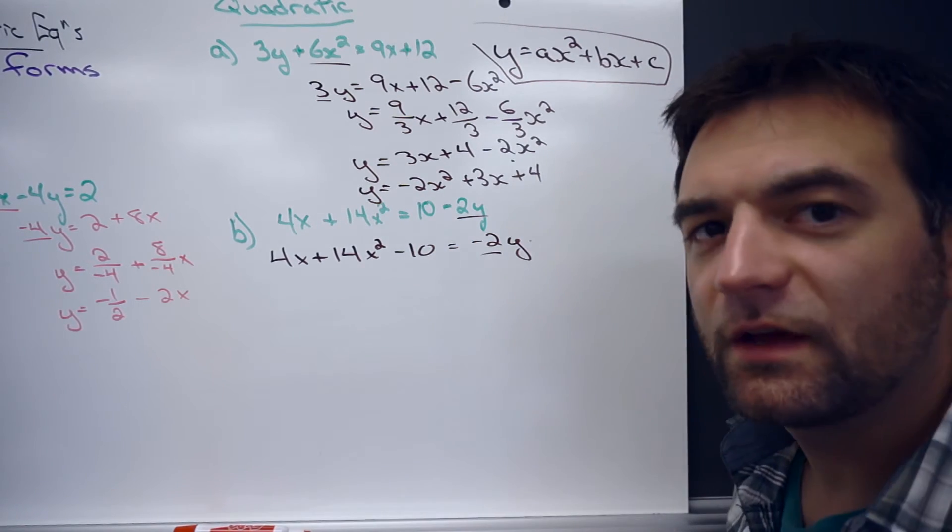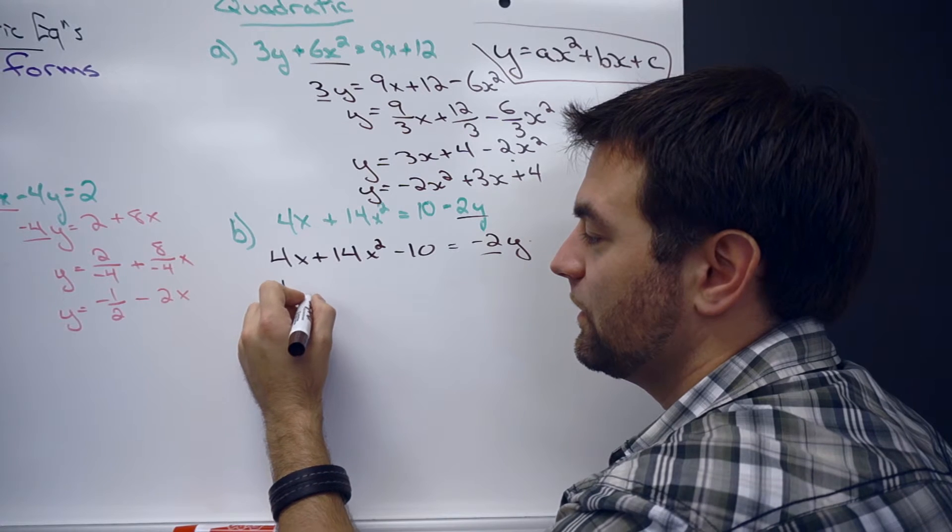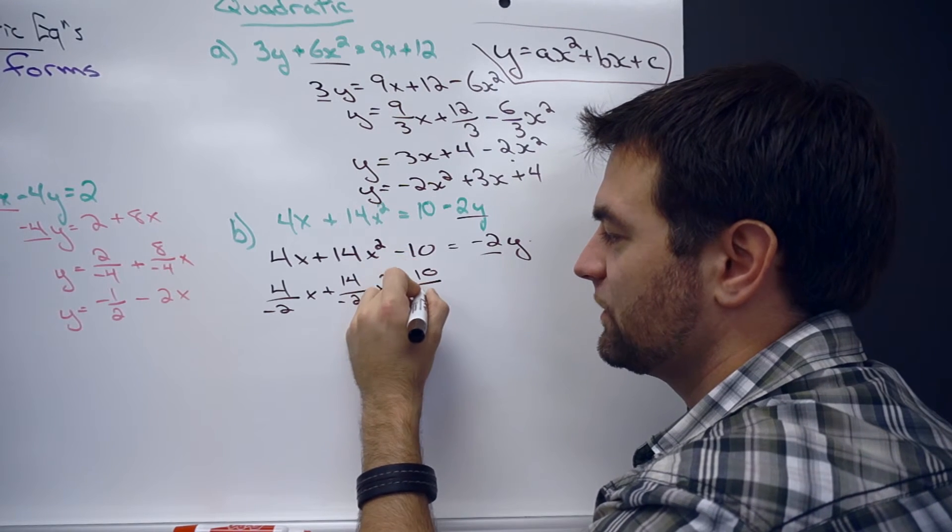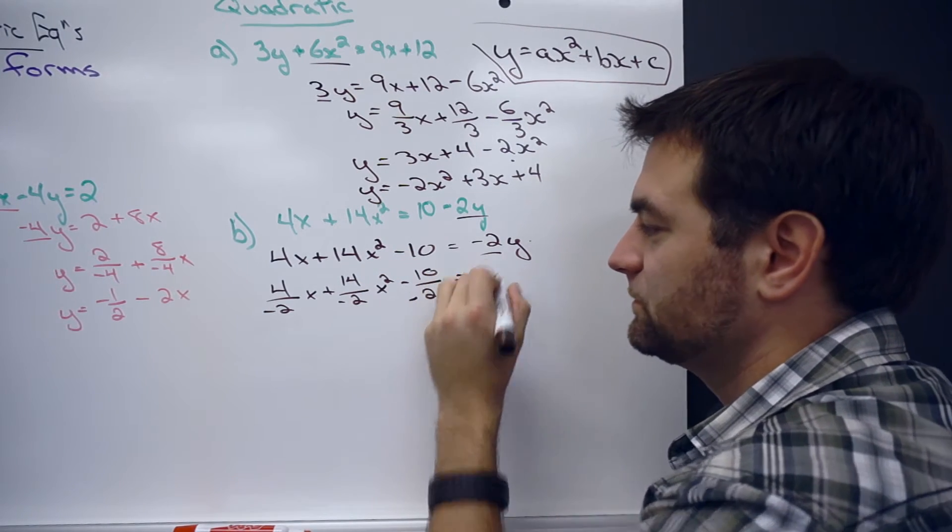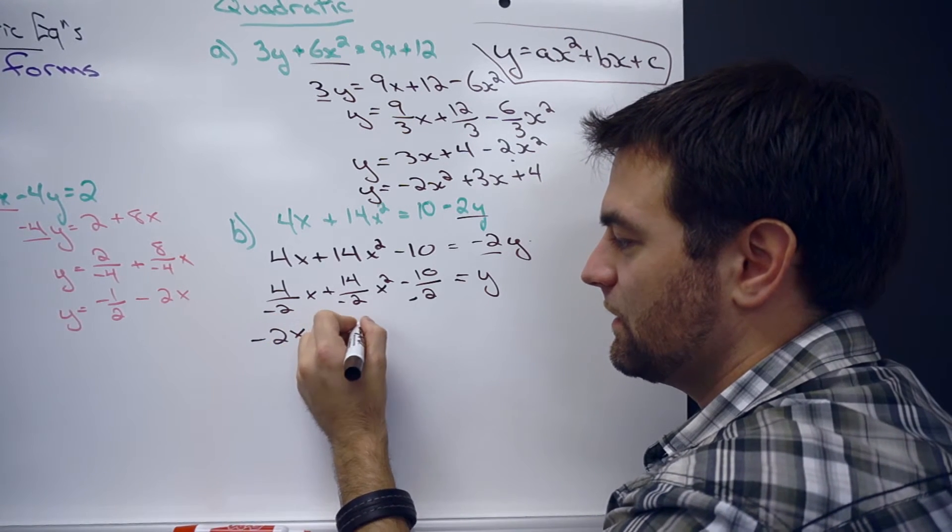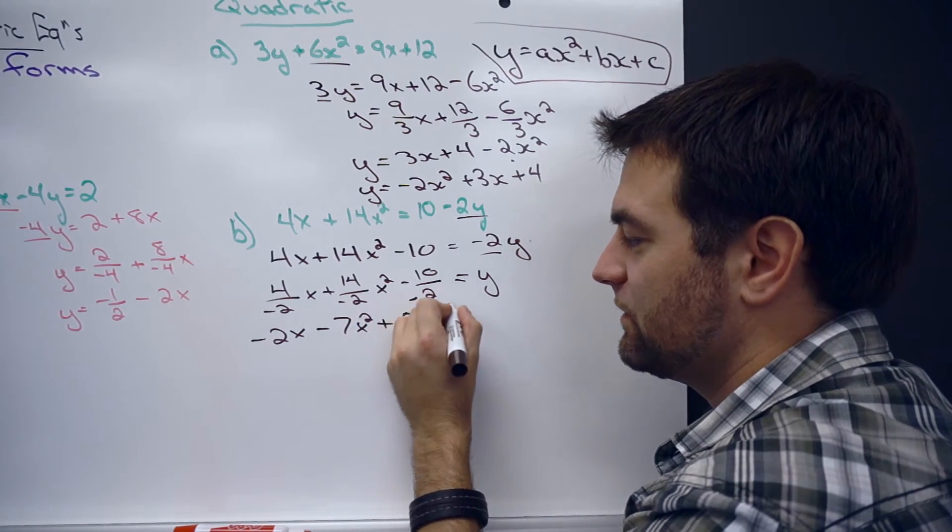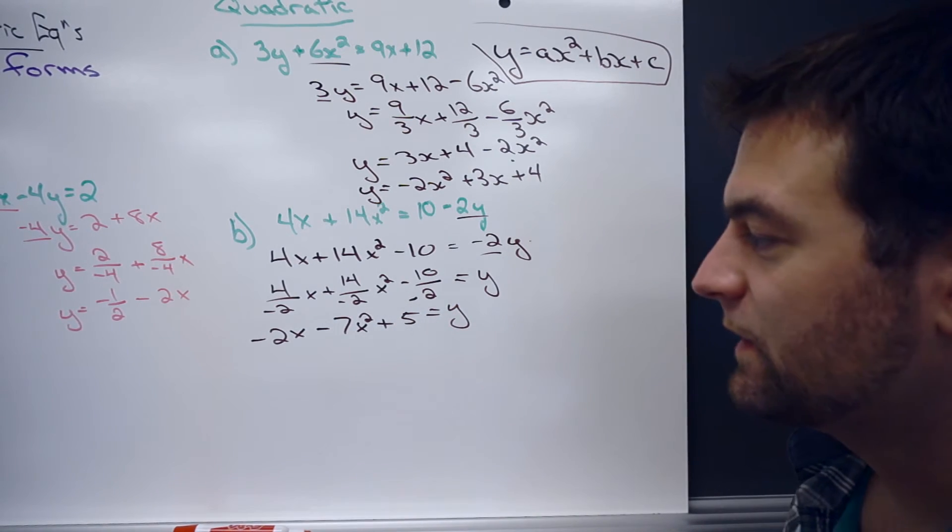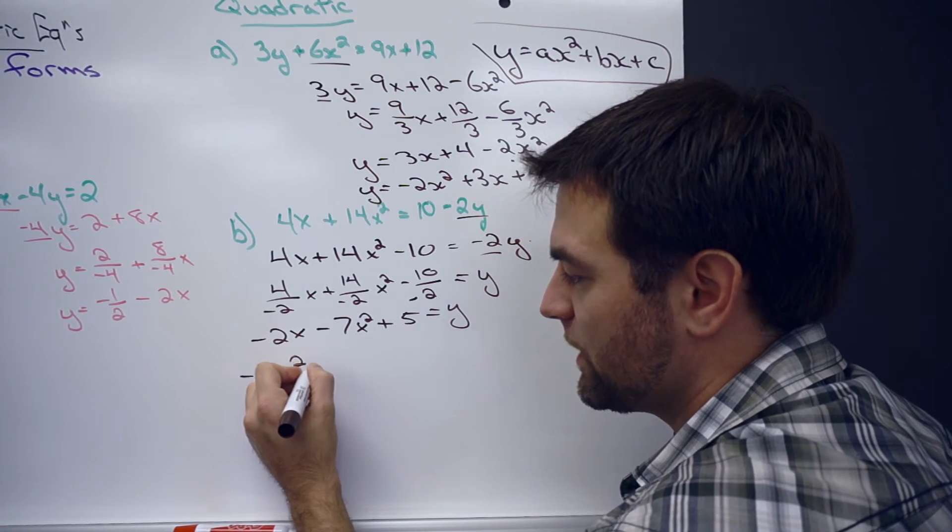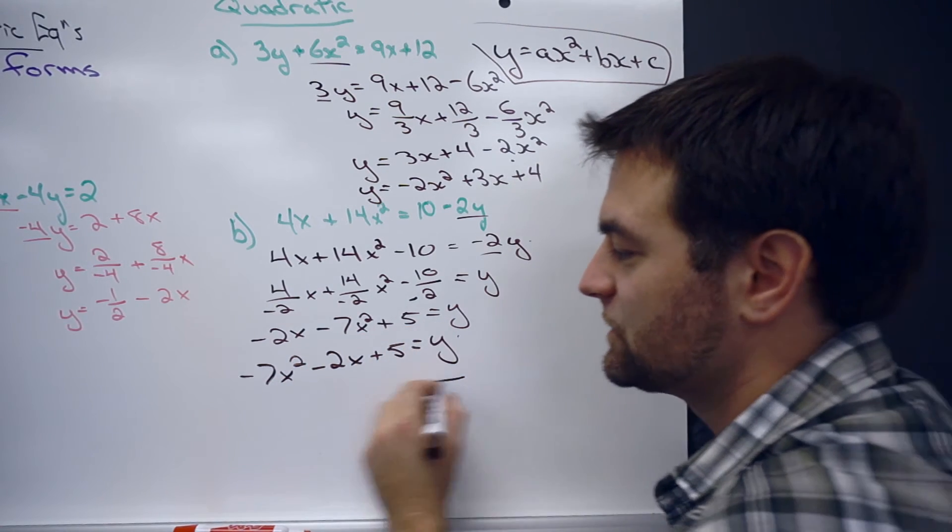And then let's get rid of that negative 2 again by dividing everything by the 2. So, 4 over negative 2x plus 14 over negative 2x squared minus 10 over negative 2 equals y. This becomes negative 2x minus 7x squared. And then again, just to get that in order, let's just flip these two around here. So, negative 7x squared minus 2x plus 5 equals y. And there's our equation there.